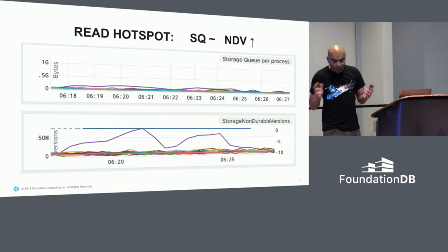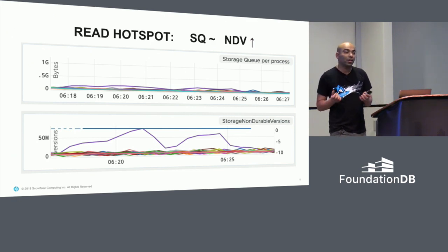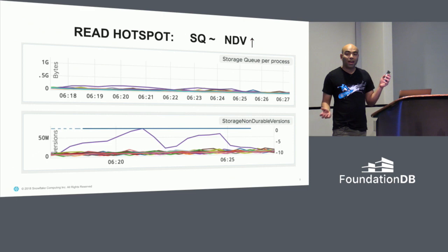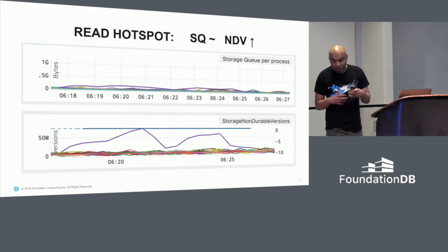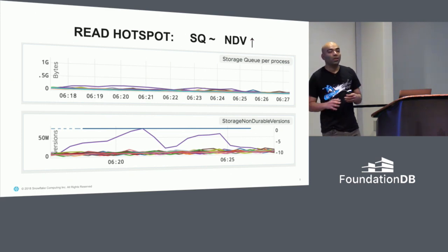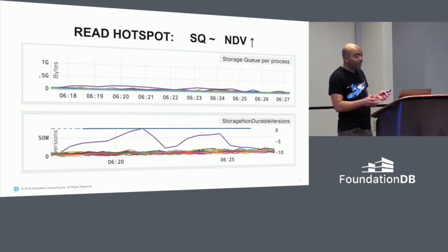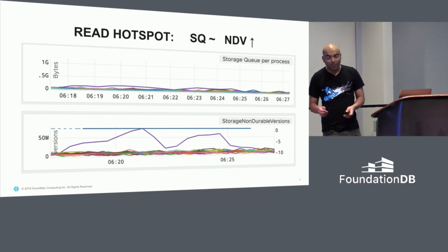The reason for this is FoundationDB tries to prioritize reads over writes. If you have a large amount of writes, they get deprioritized, and the storage node is busy supplying all the reads. If there's a large number of reads, then the storage non-durable versions will go up as a result.